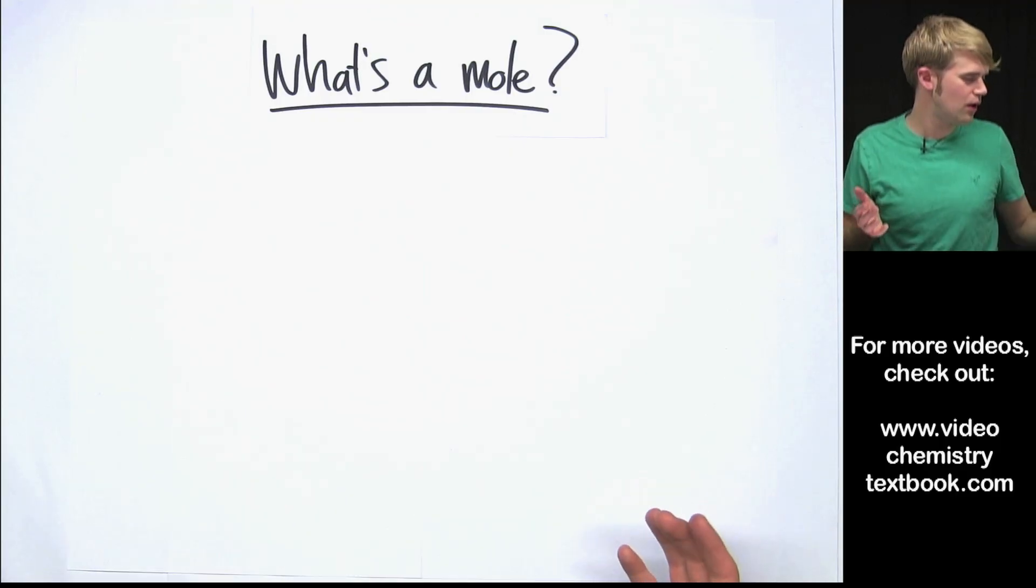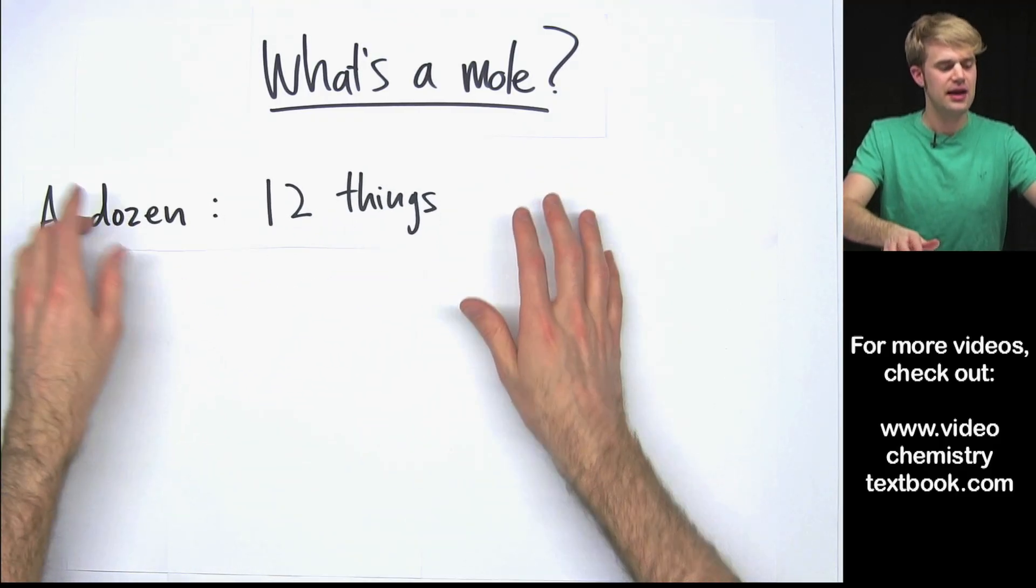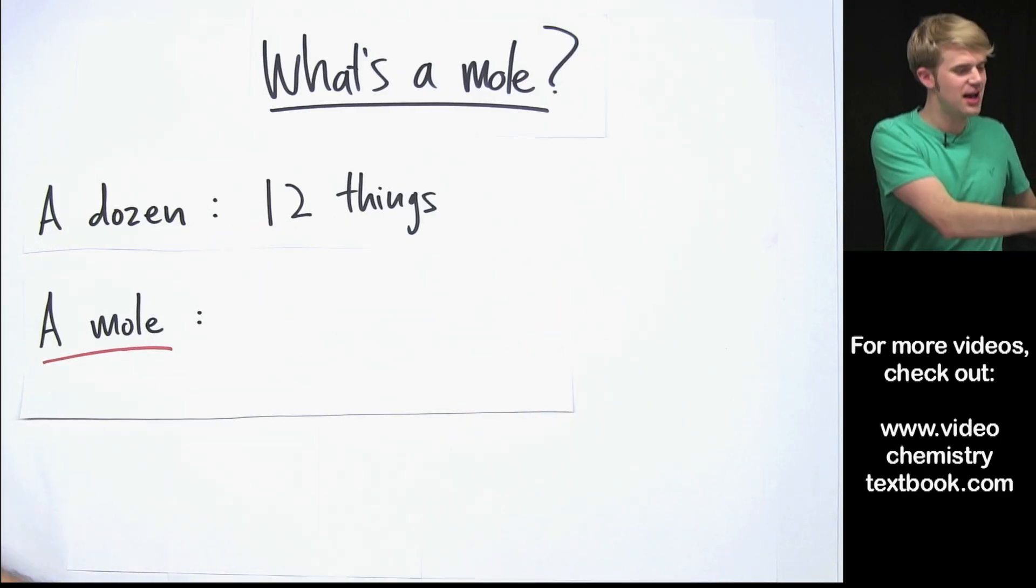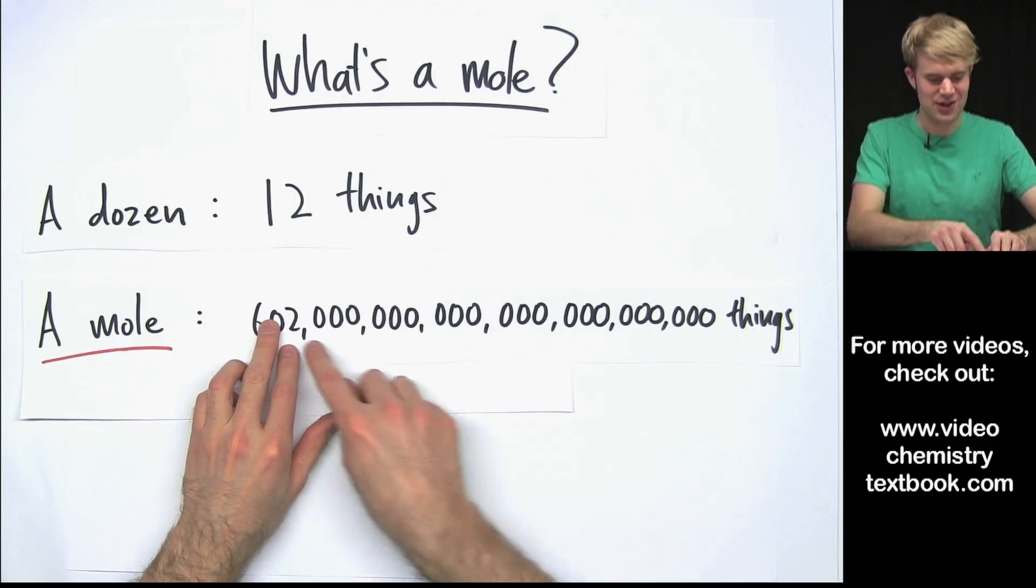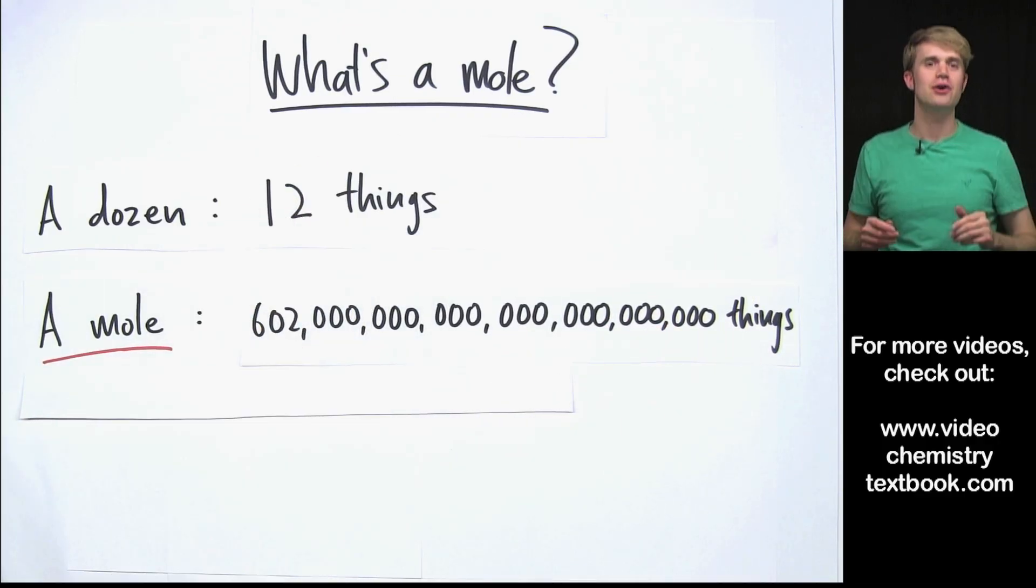So what's a mole? Well, I always like to say that a mole is kind of like a dozen, except a dozen has 12 things in it and a mole has 602 hexillion things in it. That's pretty big. It's a lot bigger than a dozen.